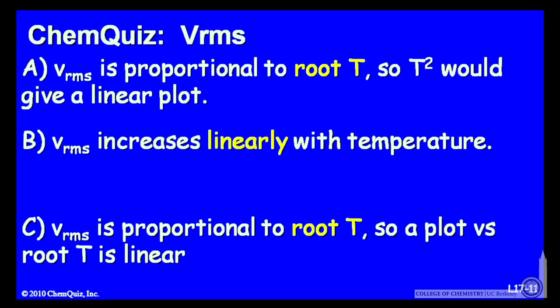Let's look at a possible explanation for all the answers. A, the root mean squared velocity is proportional to root T, so T² would give a linear plot.